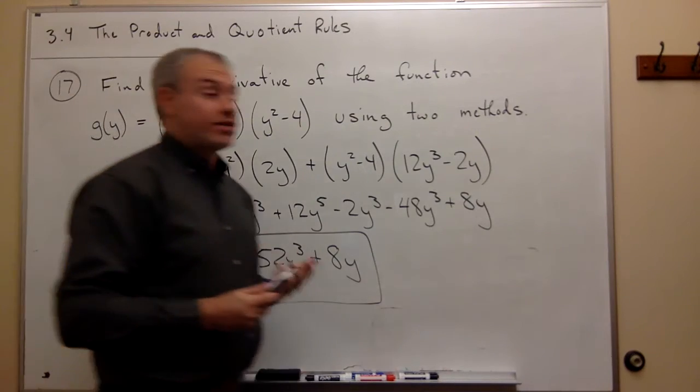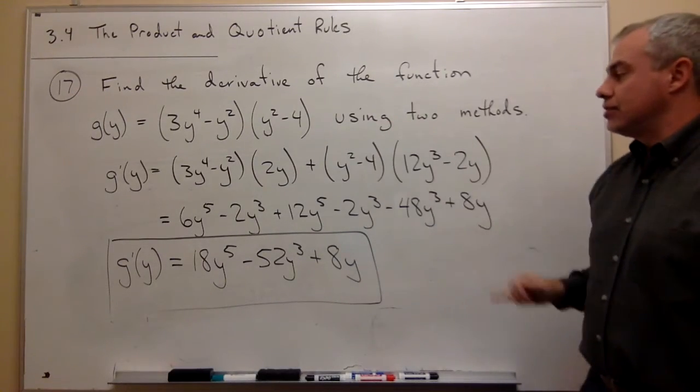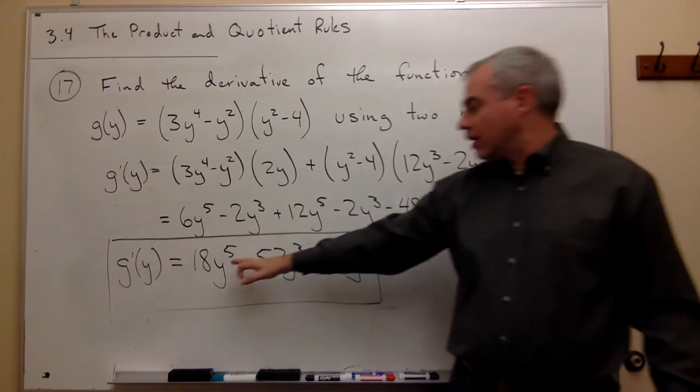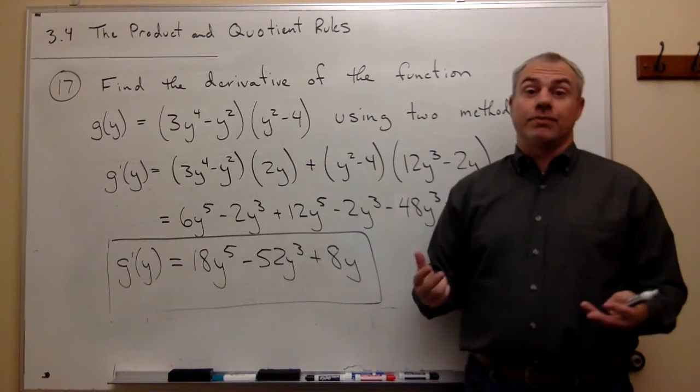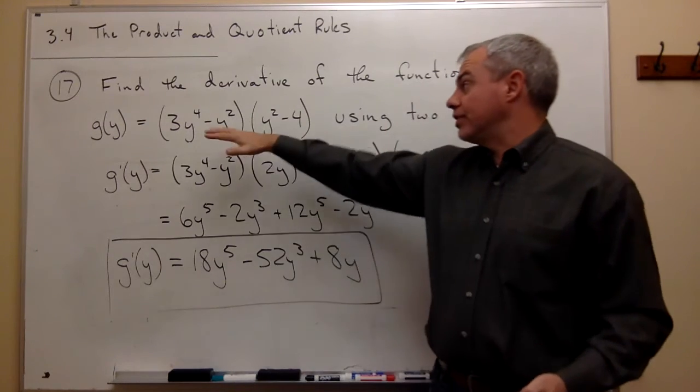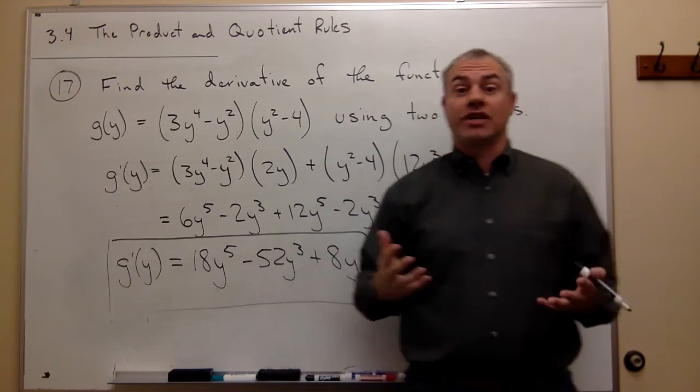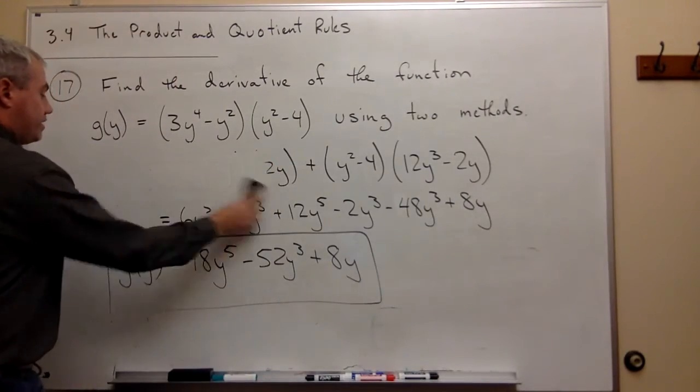Now, that certainly is the correct answer, but remember I said let's calculate this using two different methods. So let's remember this, 18y^5 - 52y^3 + 8y. Let's do the problem again. This time, we'll foil first with the original function before we take the derivative, just to show that we should get the exact same thing. So let's do that. I'll erase here.